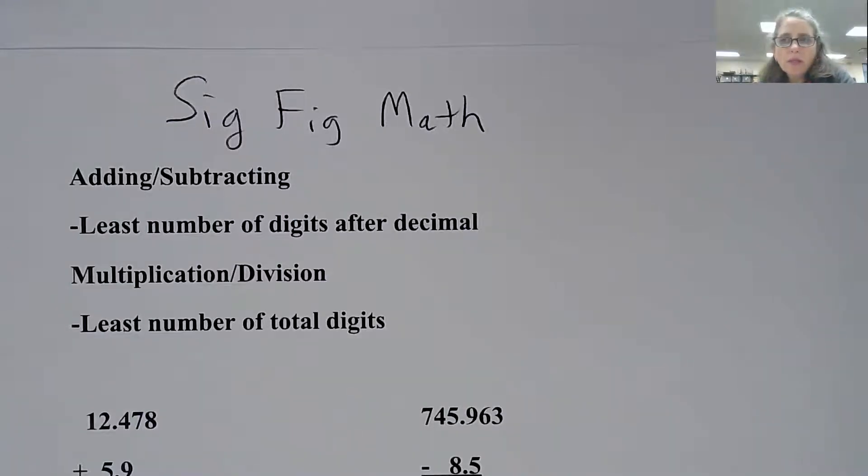So this video is going to talk about now that we know what sig figs are and when zeros are important, when we do math calculations in chemistry, how do we round numbers to the correct number of significant figures or significant digits?